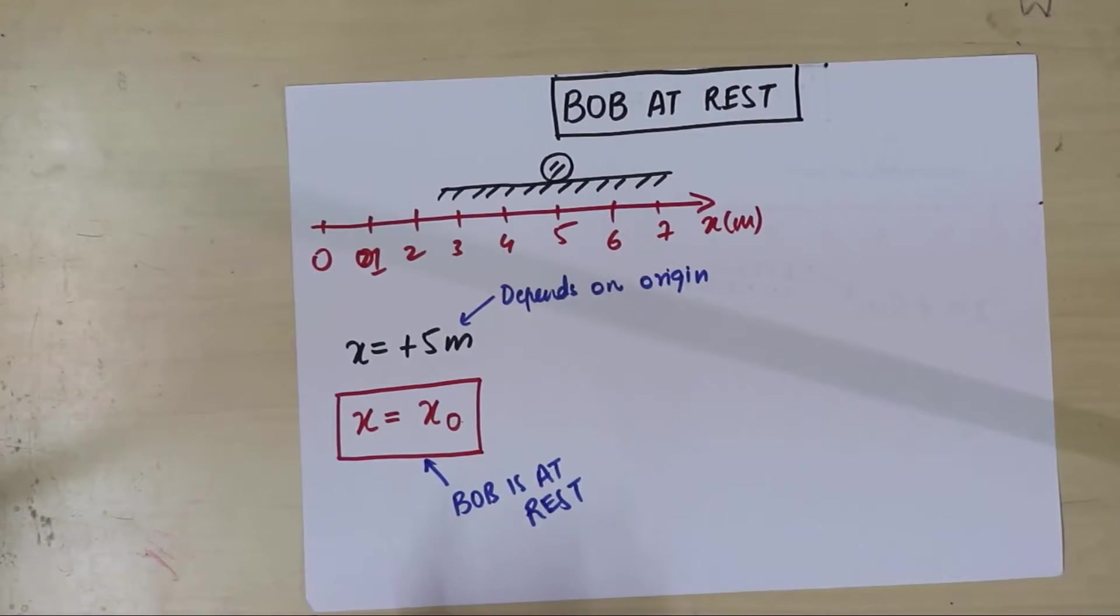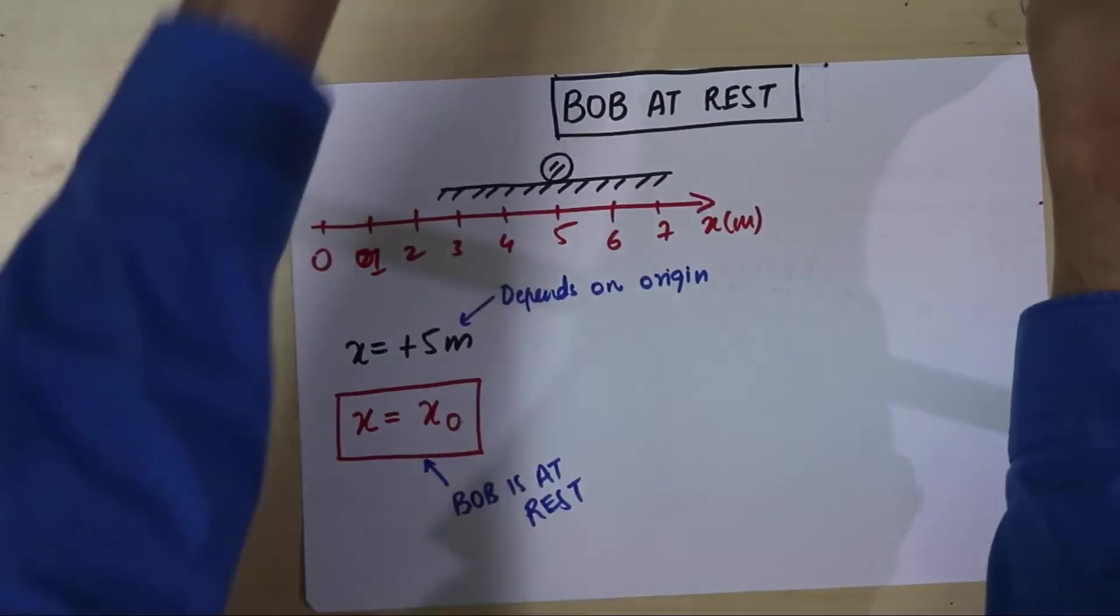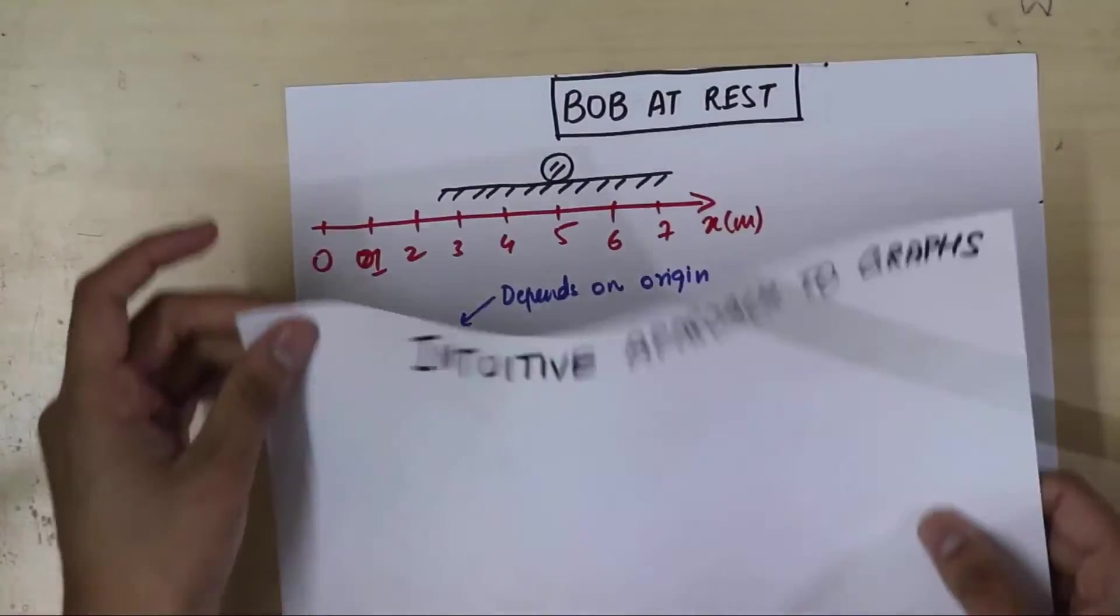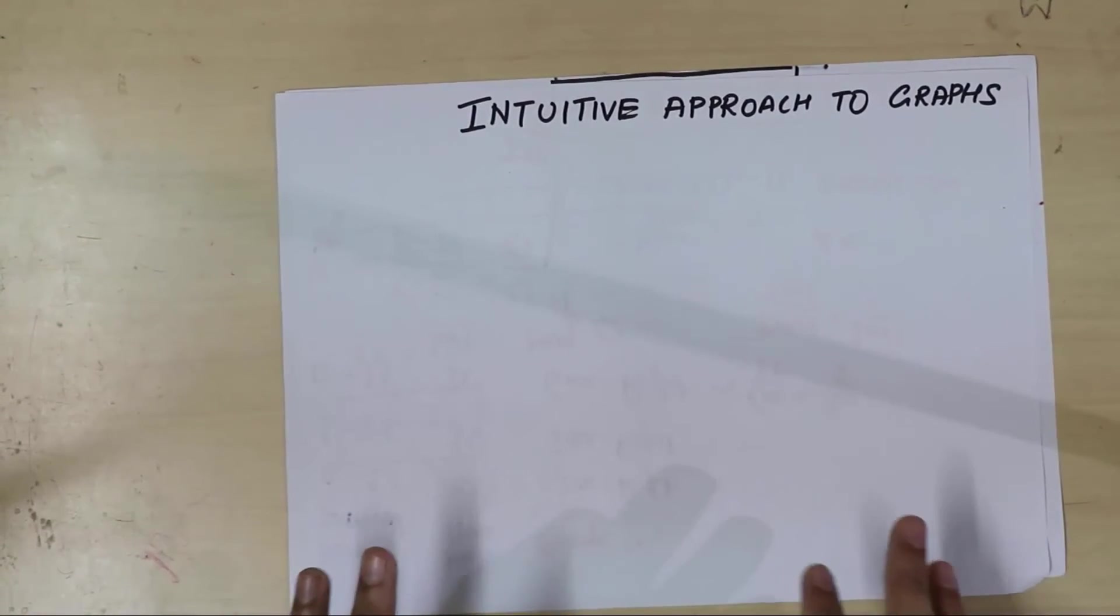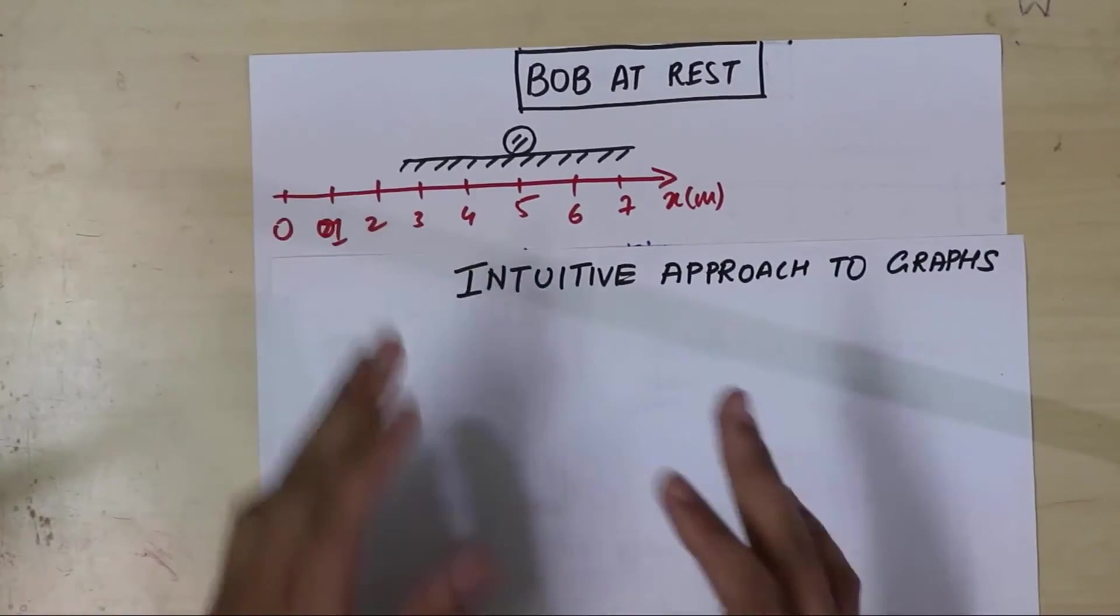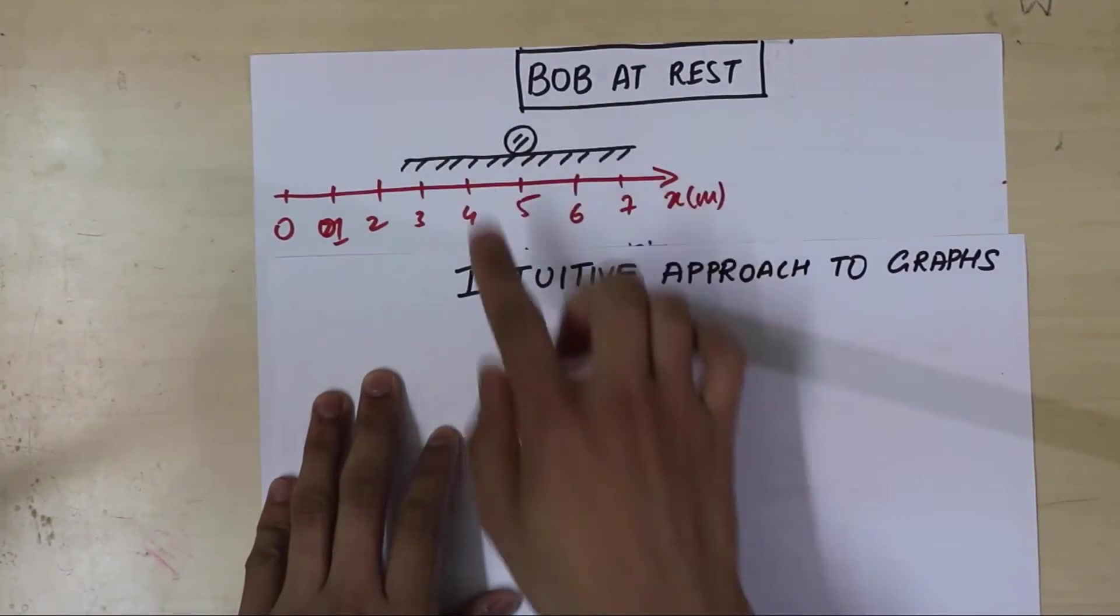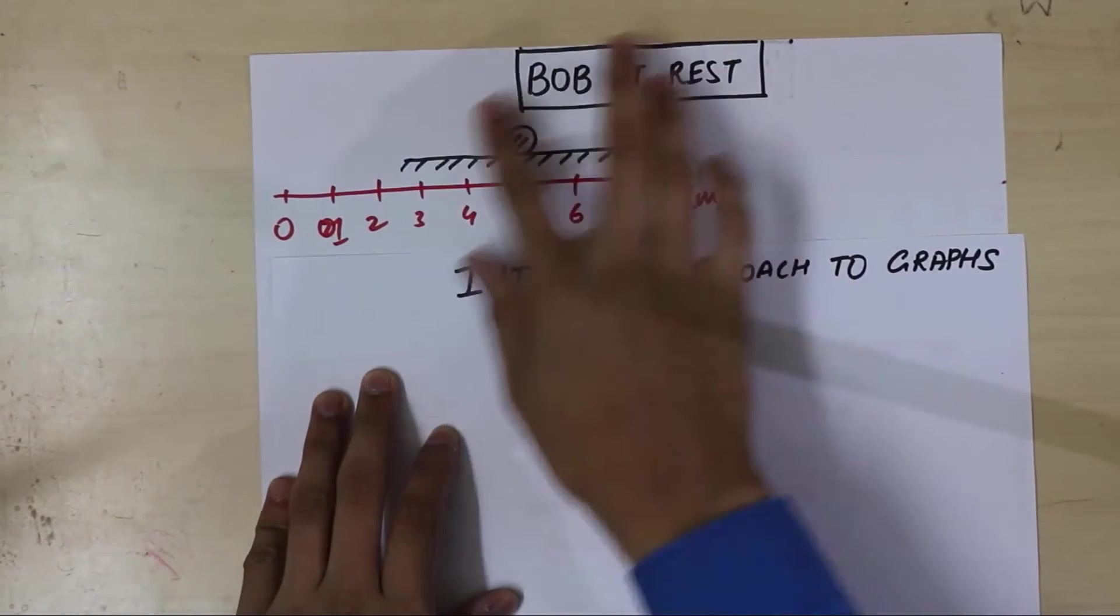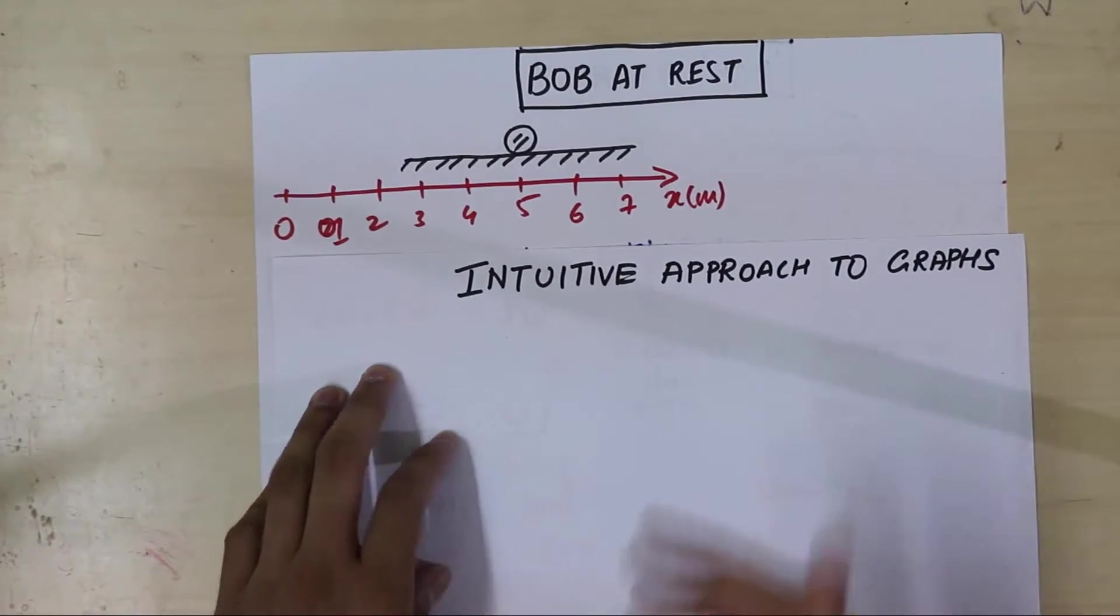The next thing I want to do is graph this guy. Remember, kinematics is about graphing and it's about equations. Now, if you have never graphed something before, don't worry. I'm going to give you an intuitive approach to graphs. So we'll first do it here intuitively. And then we're going to redraw our graph over there. So what exactly is graphing? Well, in simple terms, graphing is basically taking snapshots of Bob's position. What I'm going to do over here is take snapshots of Bob's position and look at it at different moments in time.